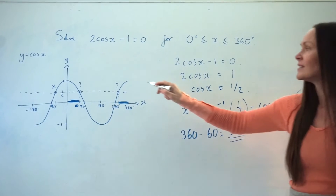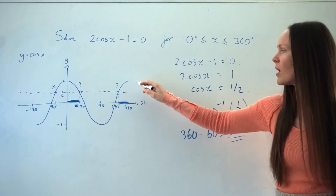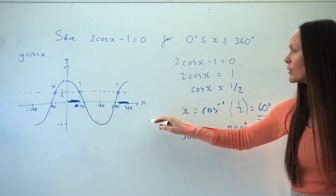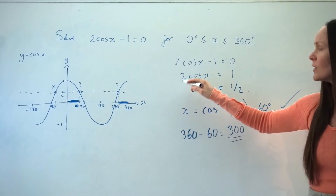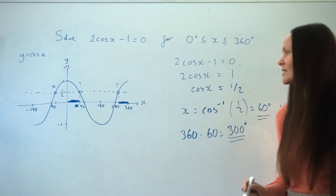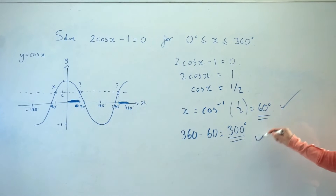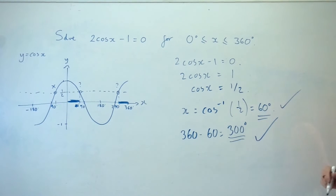Any solutions that come after this point on the graph will be greater than 360, so there are two solutions to this equation.